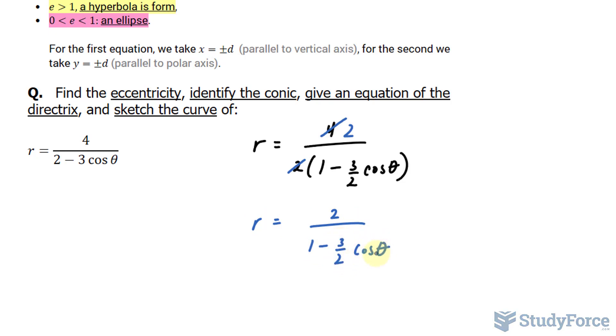Now that we have it in this form, we can determine a lot of information, one being the eccentricity. The eccentricity is that number, three over two.